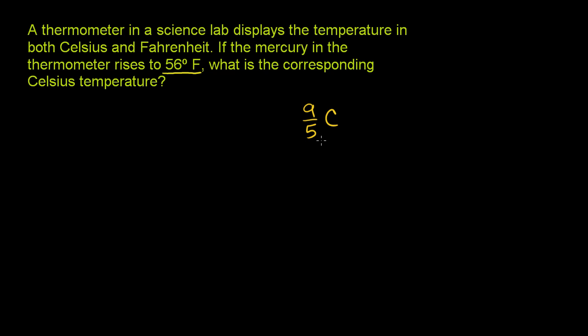And then I'm going to add 32 to it. And the reason why I know to add 32 is because when Celsius is 0, 0 times 9/5 is still 0. And we know when Celsius is 0, Fahrenheit is going to be 32. So I know I have to add 32 to it.